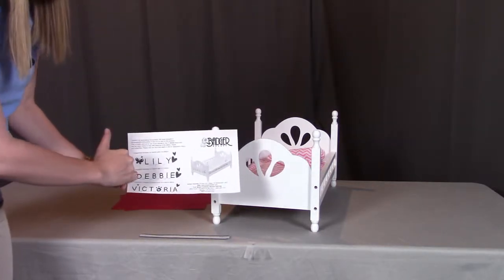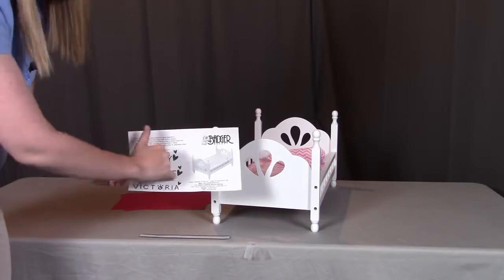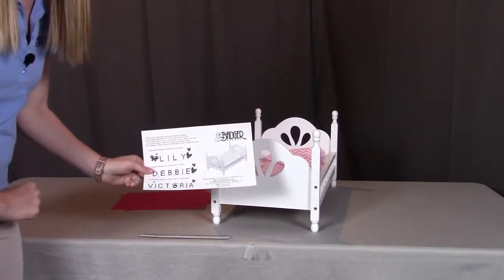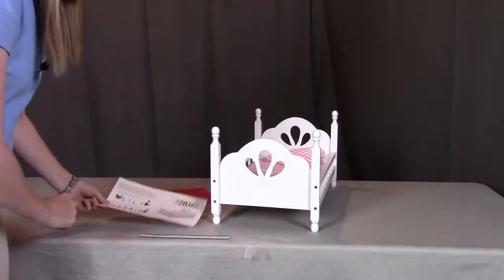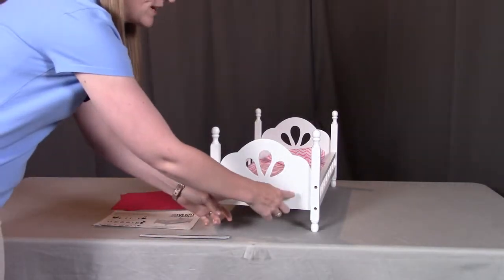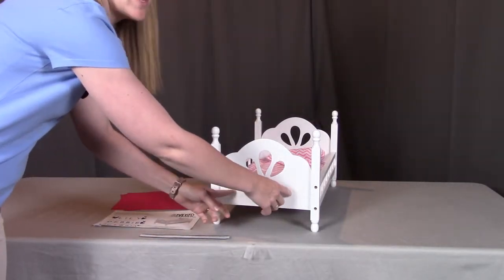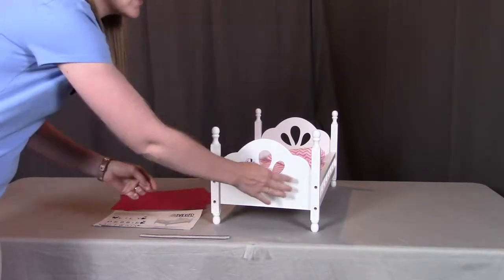What you're going to do is add the total length of all the letters and the spacing in between each letter to see how long that name is going to be. Then that total length, you're going to have to center on your Badger Basket product, and then start applying the letters.